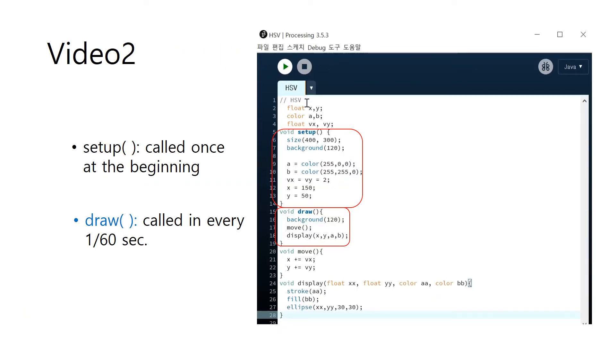This is another example. We will move a small circle diagonally. In that case, we use two functions: move function and display function. In the move function, it changes the location of a small circle. And in the display function, it draws the new circle at the updated location.